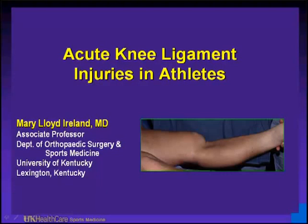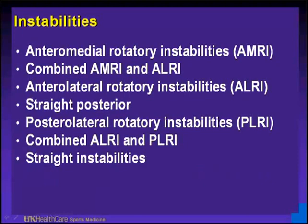This was a division one football athlete who was crushed during a game and had a posterior cruciate ligament tear with severe straight posterior instability. Classifications of instabilities are very important. The reason we don't use which structure has been injured as a deficient problem is that it doesn't tell us what the functional instability is and the functional problem that the individual has.